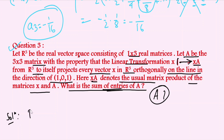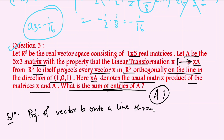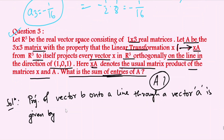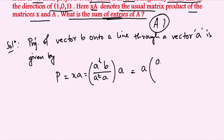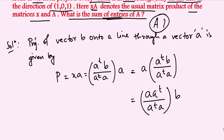This is a question about orthogonal projection. The projection of a vector b onto a line through vector a is given by p = x·a, where x = (aᵀb)/(aᵀa). So p = a(aᵀb)/(aᵀa), which can be written as M·b where M = aaᵀ/(aᵀa) is the projection matrix.